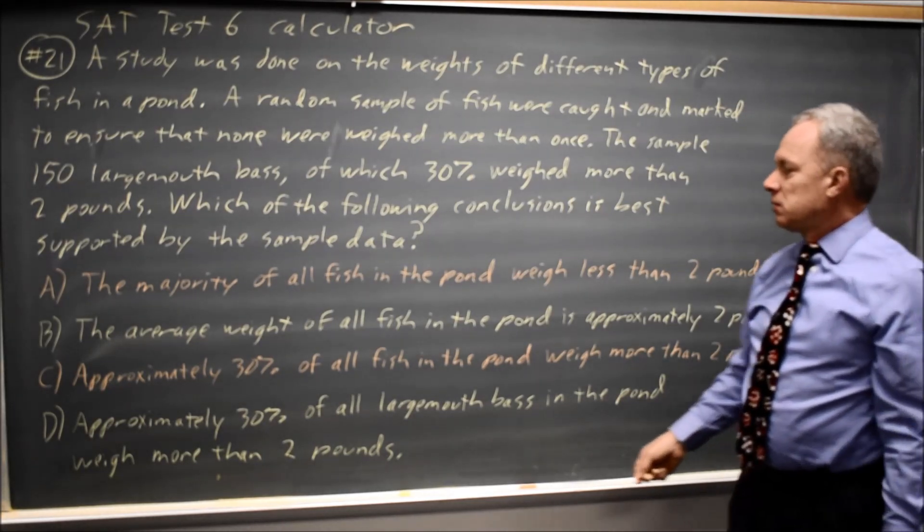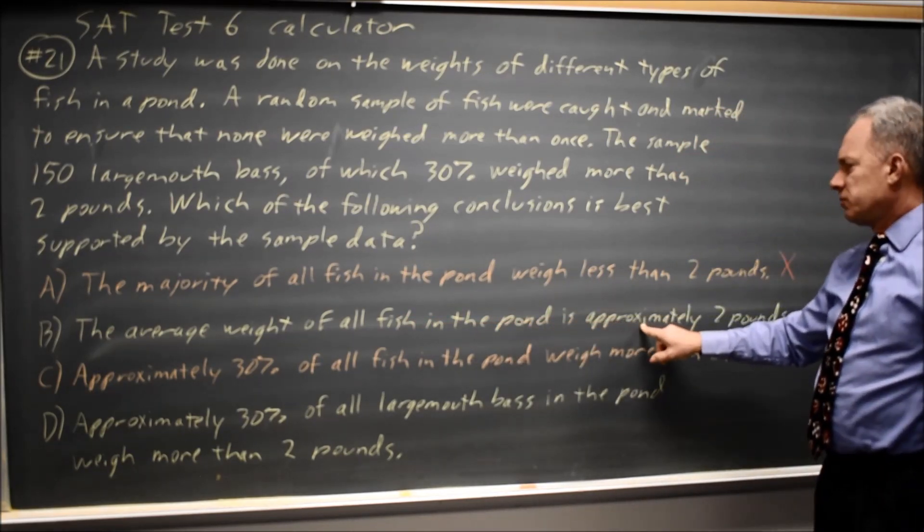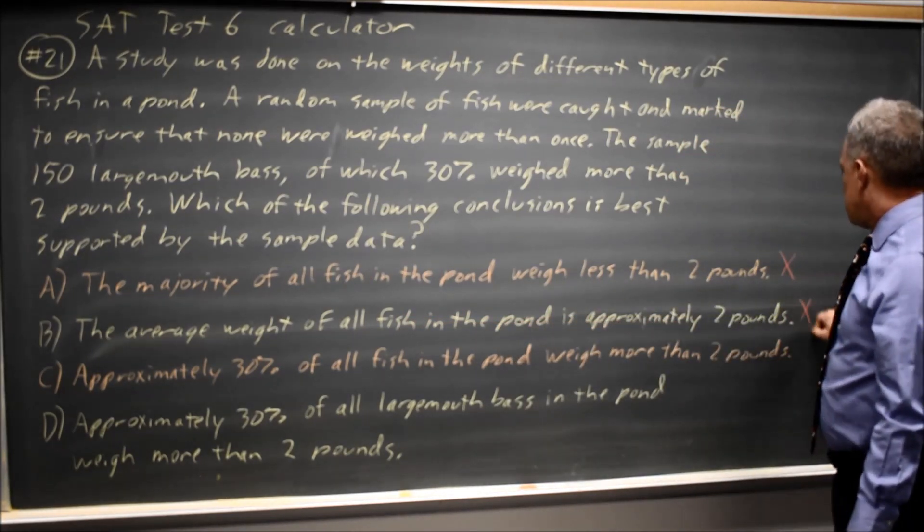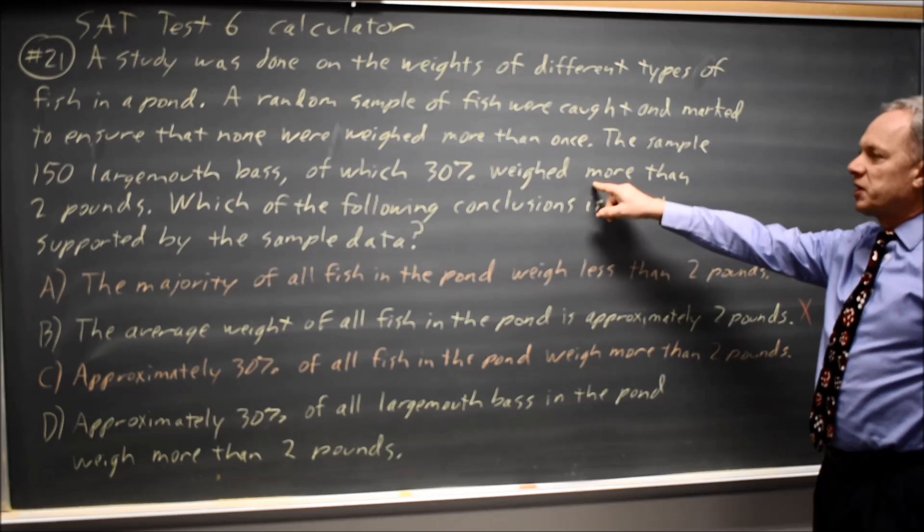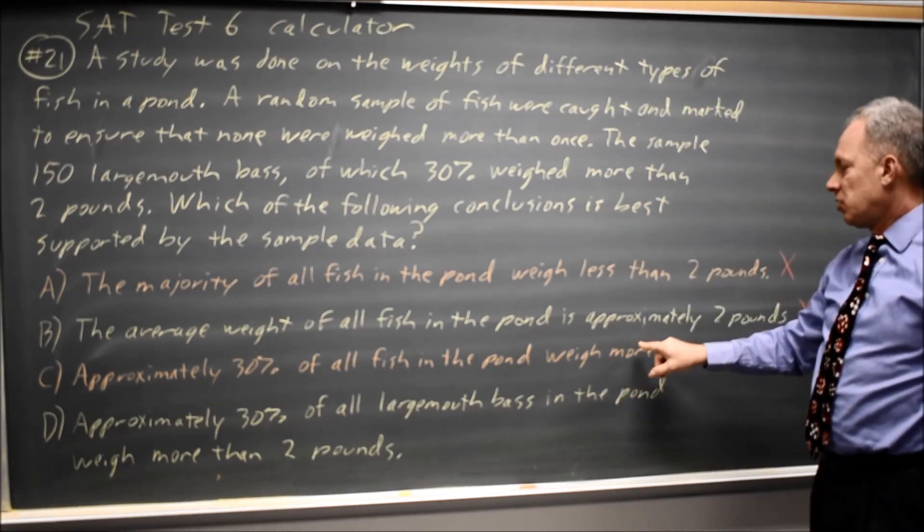Choice B. The average weight of all fish in the pond is approximately 2 pounds. Again, the information provided is about largemouth bass only. We can't draw conclusions about all fish in the pond.